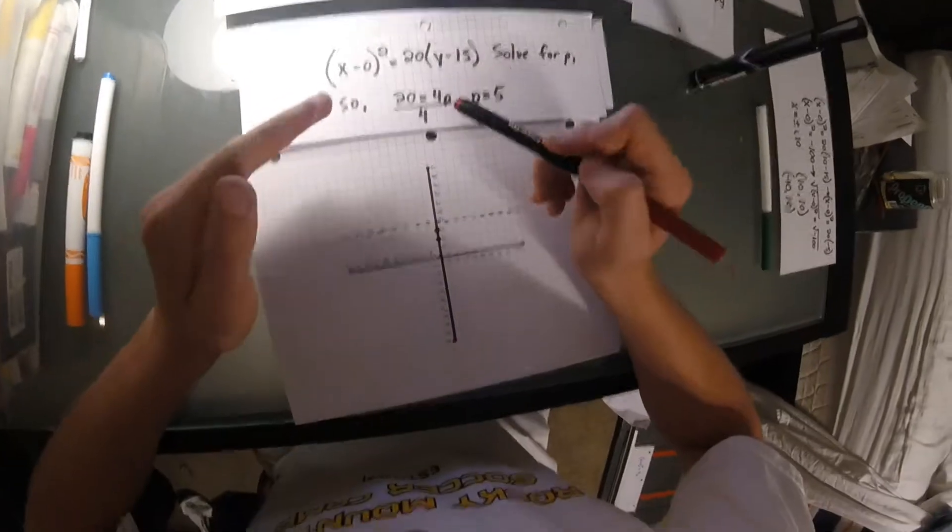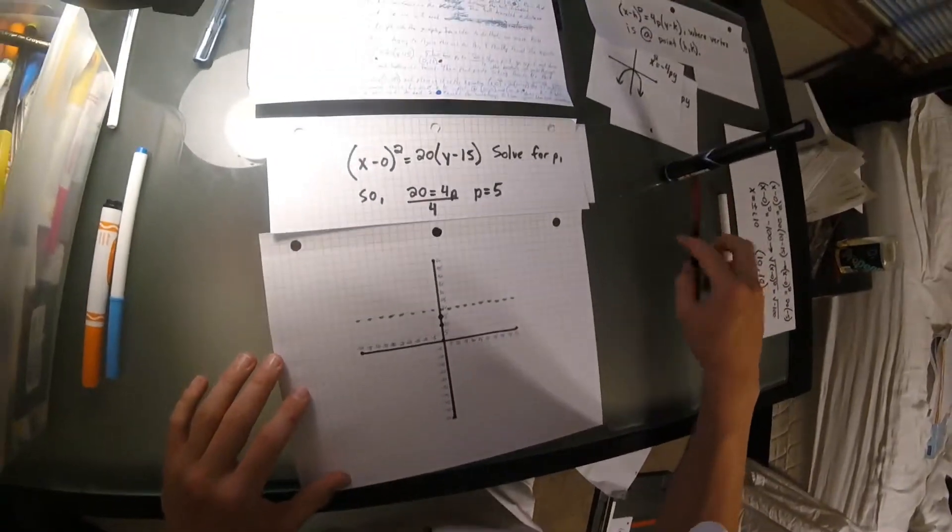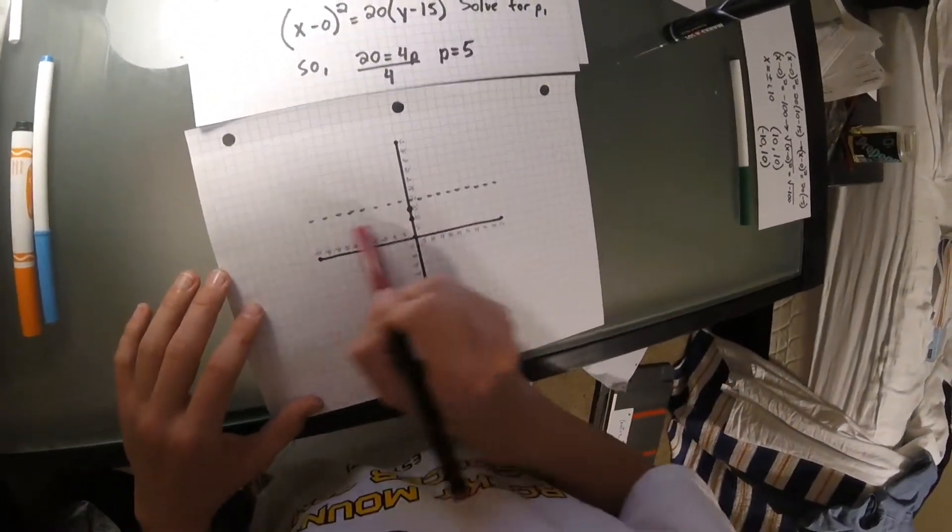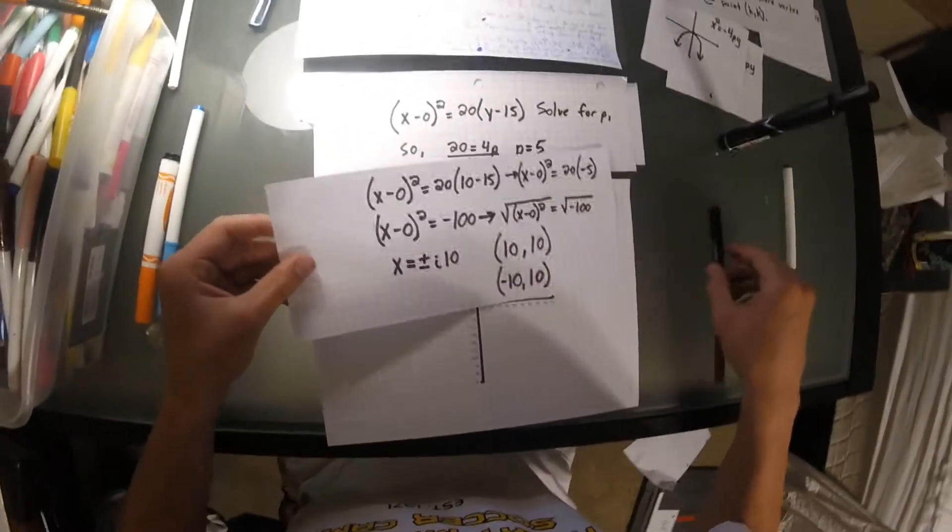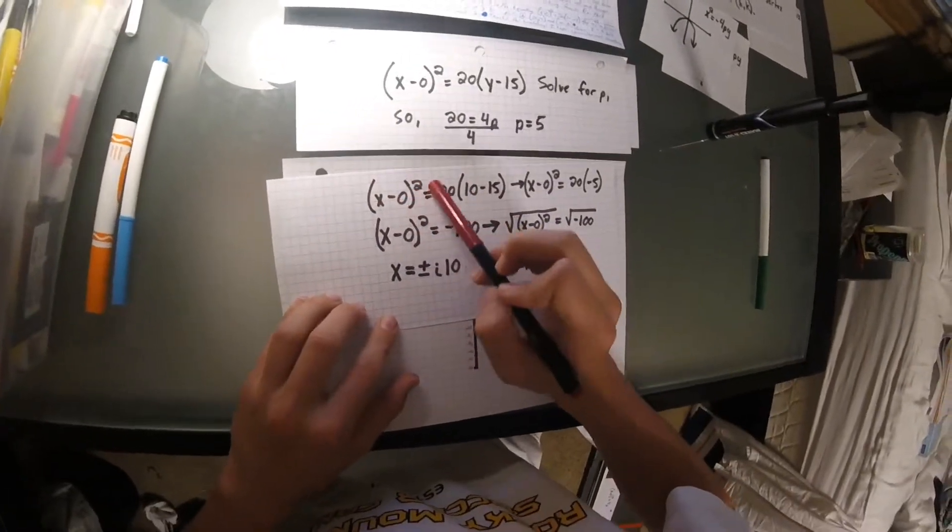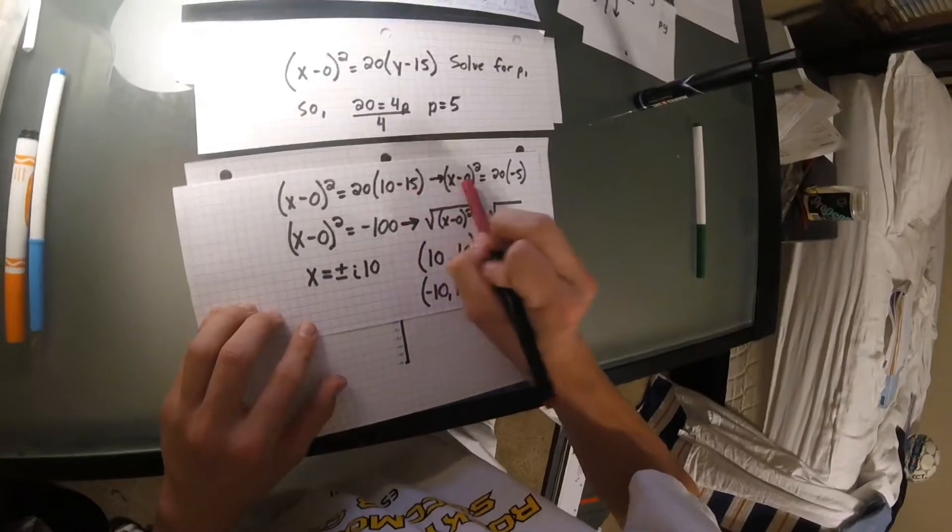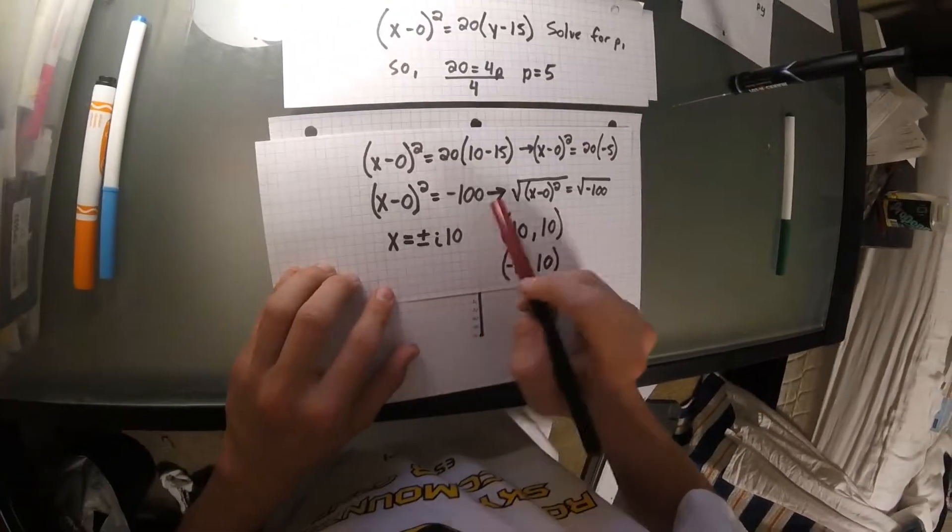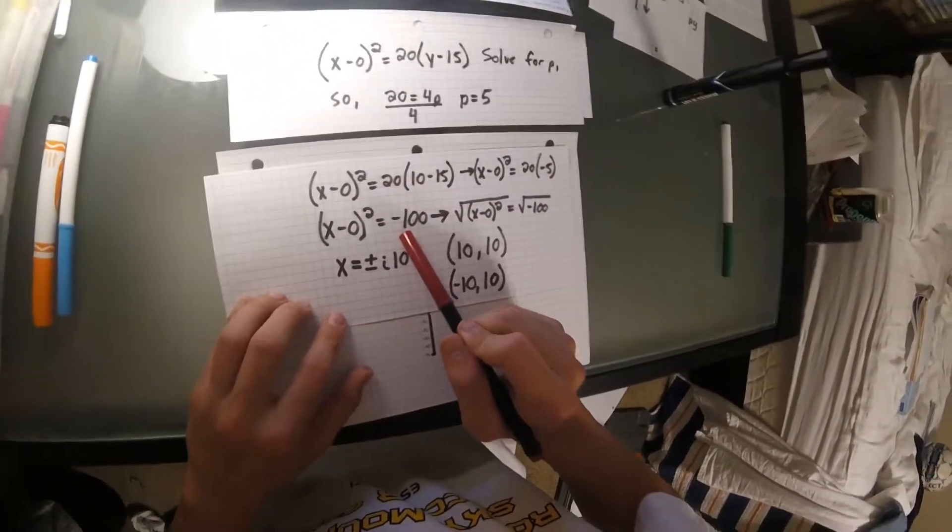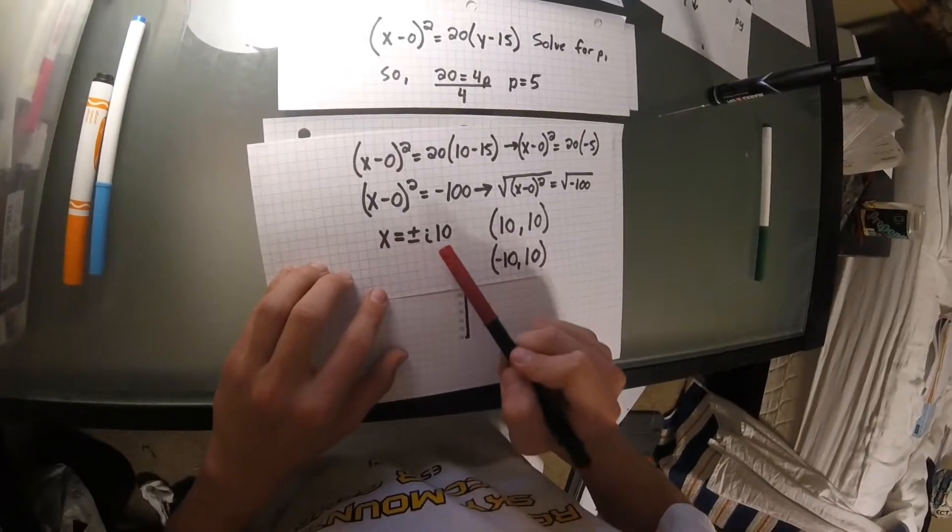Now, we're going to find additional points that the parabola crosses through using this focus. And to do that, we are going to take the y value of the focus, which is 10, and place that in our equation. So, once we have done that, x minus zero quantity squared is equal to 20 times 10 minus 15. So, then we're going to simplify that, and we get x minus zero quantity squared is equal to 20 times negative 5. We're going to simplify that even more to where it is equal to negative 100. We are going to take the square root of both sides, and x is going to equal plus or minus 10i.